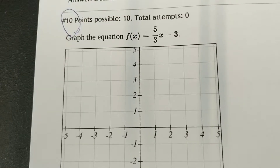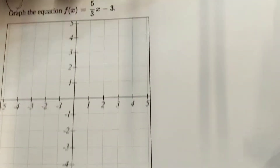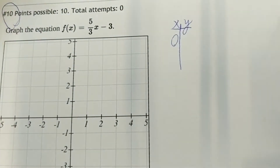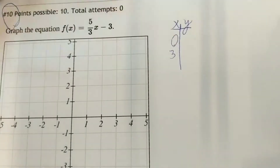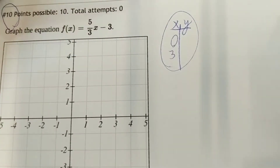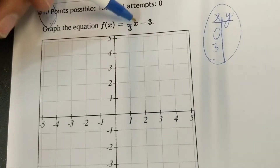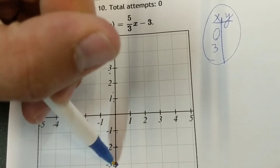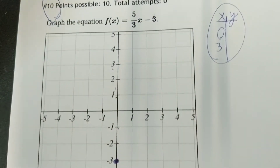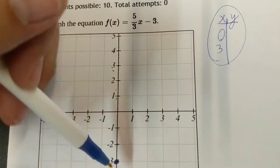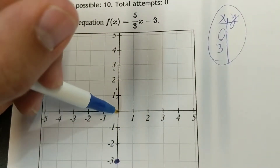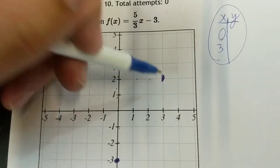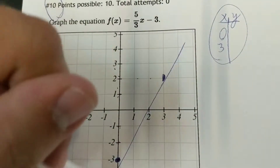Now graph the equation f(x) = (5/3)x minus 3. You can use an X-Y chart — plug in zero, or plug in three so it cancels with the denominator. By shortcut: the minus three means start three steps down on the y-axis, then the slope of five-thirds means go up five and over three. Connect those dots and you've got the line.